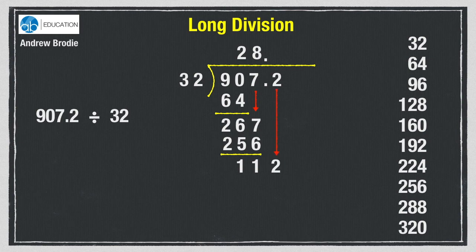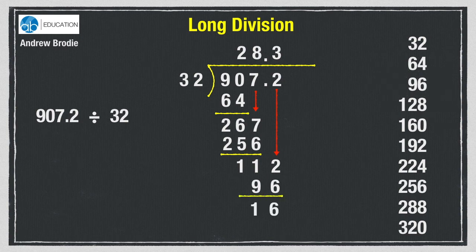Bring down the two to give us 112. 32 into 112 goes three times because three 32s are 96. Subtract the 96 from 112 to find 16. We now need to put an extra zero in the question — we are allowed to put as many zeros as we like to the right of any number which is to the right of the decimal point. We bring down the zero to make 160. There are exactly five 32s in 160. Our final answer is 28.35.